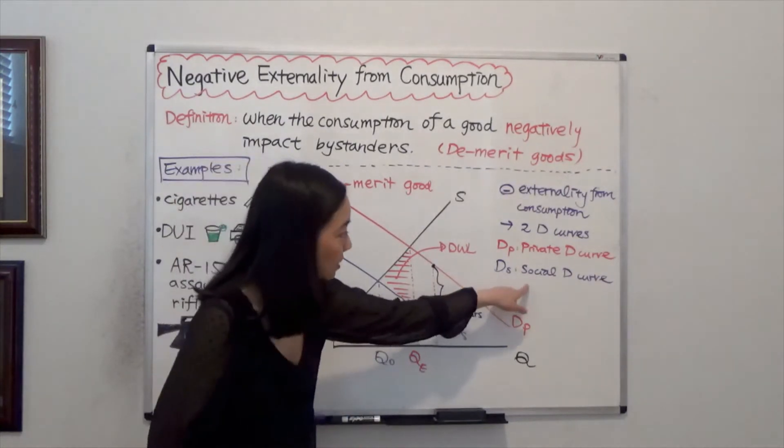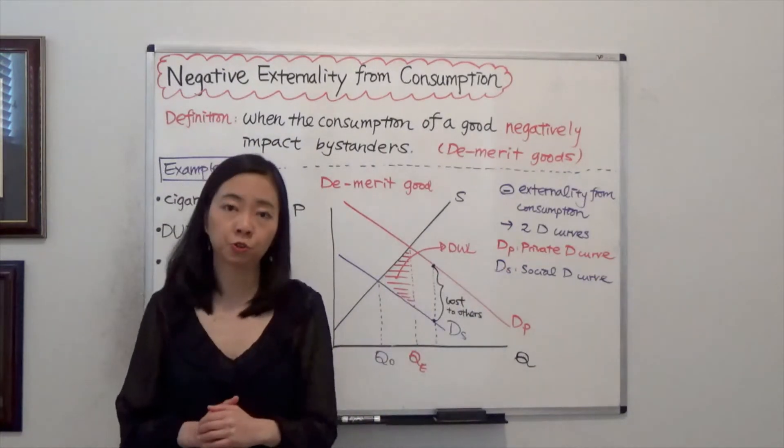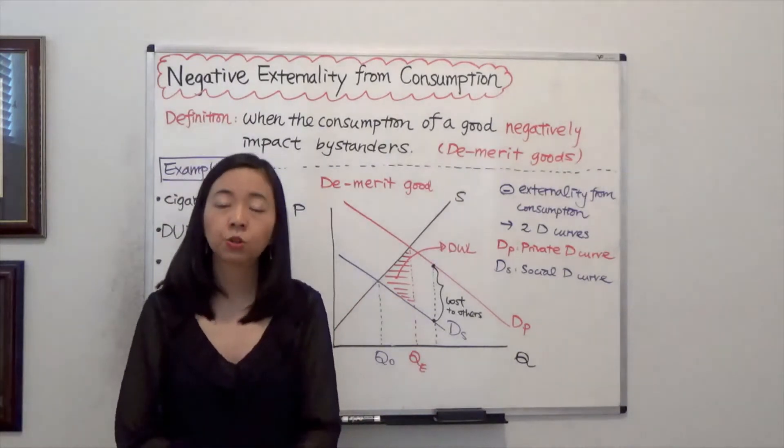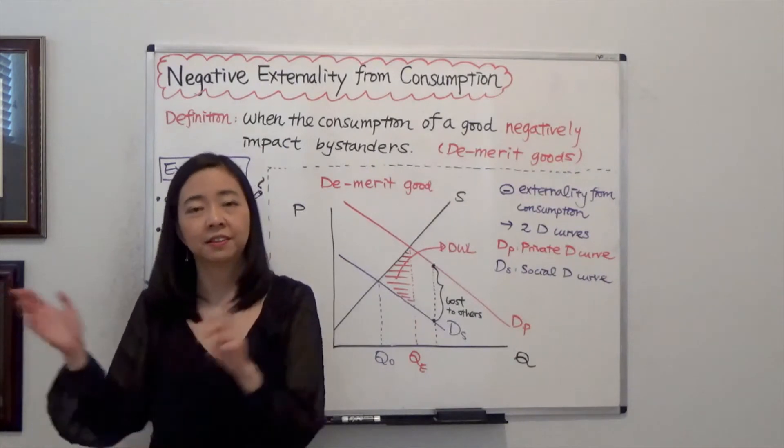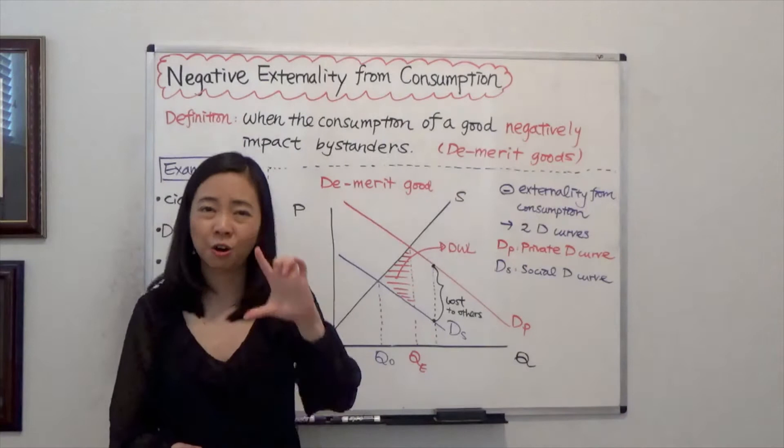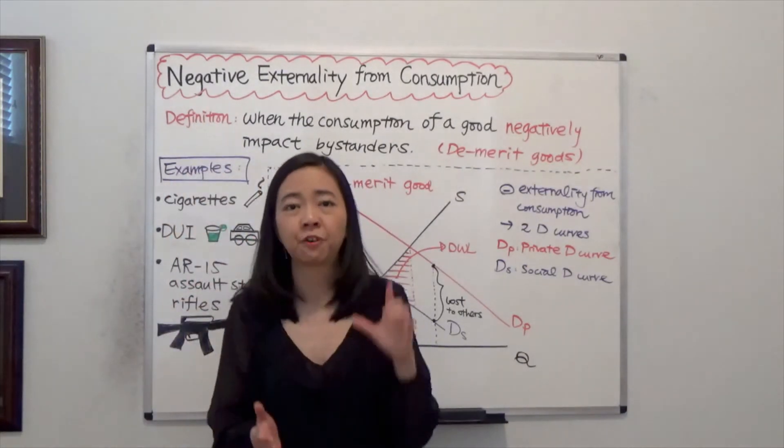And DS we call the social demand curve. That demand curve reflects the value of the good to the entire society, which includes the value to the consumer and the value to the public. Now, this value to the public is actually negative because that's a cost. We know that the public or bystanders suffer from this consumption.